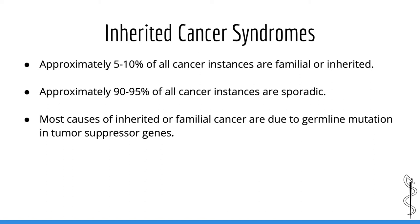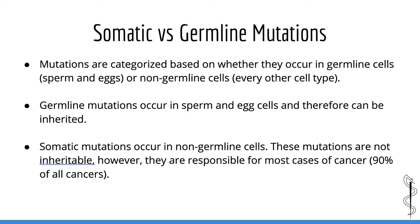Now let's talk about inherited cancer syndromes. The overwhelming majority of cancer instances are sporadic — that is, they are not inherited. Approximately 5-10% of all cancer instances are familial or inherited, meaning they tend to run in families and the risk can be passed down to generations. Most causes of inherited cancer are due to germline mutations in tumor suppressor genes. Familial cancer syndromes and their principles of inheritance are extremely high yield for the exam. To understand these principles, we need to talk about somatic and germline mutations.